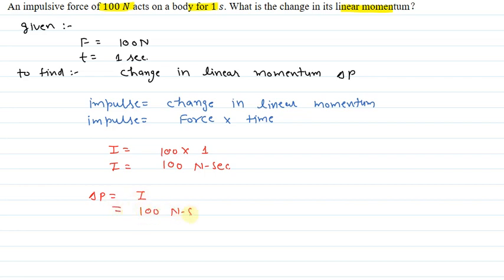100 Newton into second. So the final answer is change in linear momentum delta p is equal to 100 Newton into second. That is the explanation for this question, thank you.